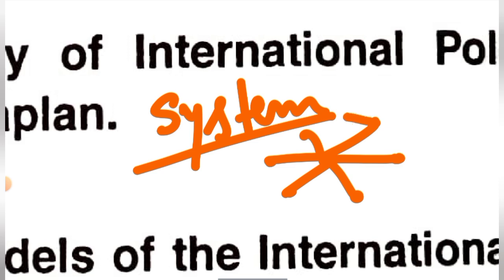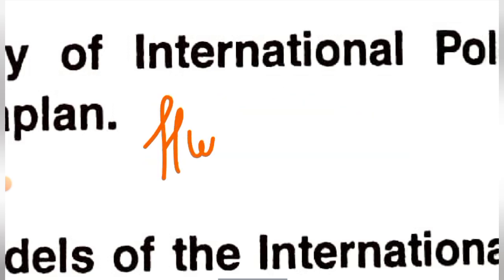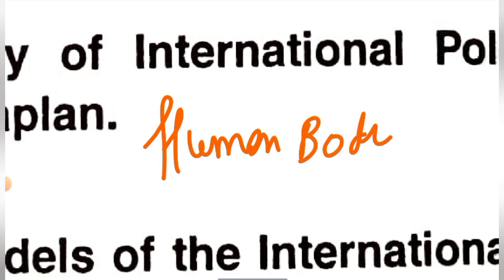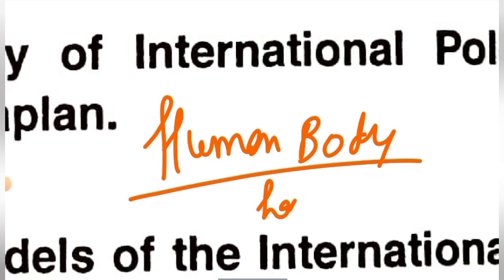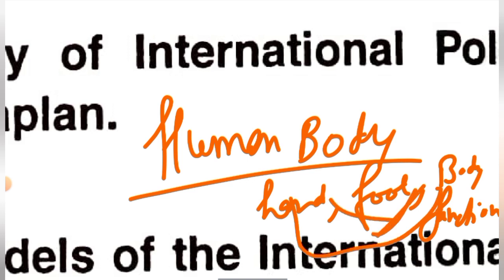For example, our human body is a system — our hands, hair, our whole body function is a system because it is all interrelated. When parts are interrelated, if one goes wrong then the other goes wrong. That is what we call a system approach.